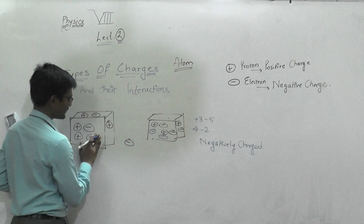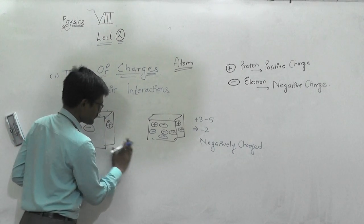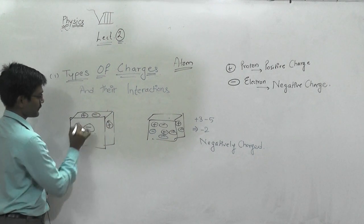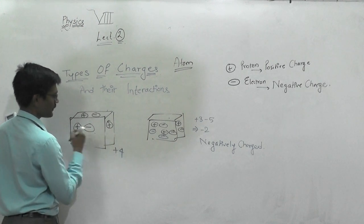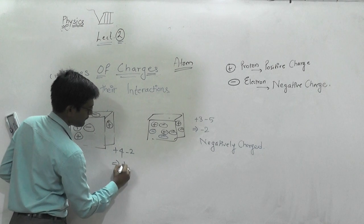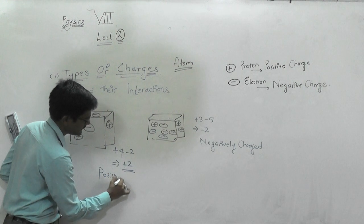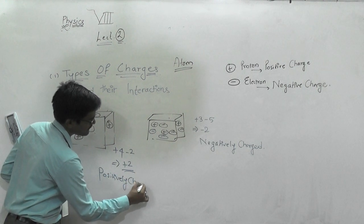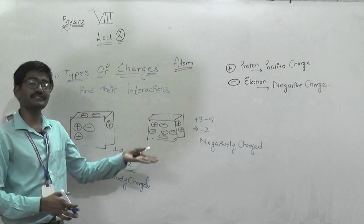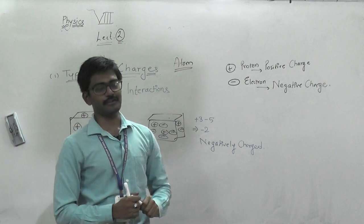If I remove electrons from this material, let's count: four positive charges and only two negative charges, so we have plus two. That means it is positively charged. This is how an atom becomes positively or negatively charged because of protons and electrons. Now we will see how this happens in practical situations.